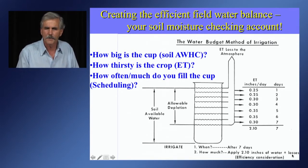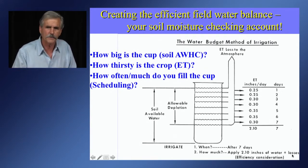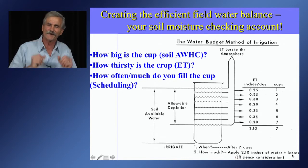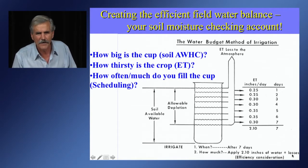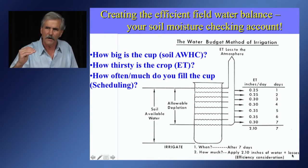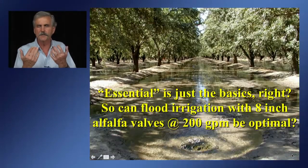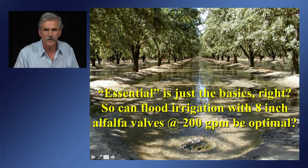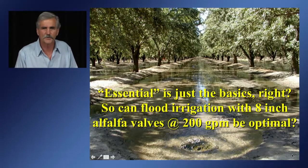You look at your total ET over a period of time. If I've got an average three-tenths of an inch ET every day — 2.1 inches — that's a seven-day reserve by going down to about 50 to 60 percent depletion. A depletion beyond that level will increase stress and cause a reduction in CO2 uptake and ET from the plant. So those are just the basics. How about flood irrigation with eight-inch alfalfa valves at 200 GPM — can I be optimal in terms of irrigation water use efficiency?